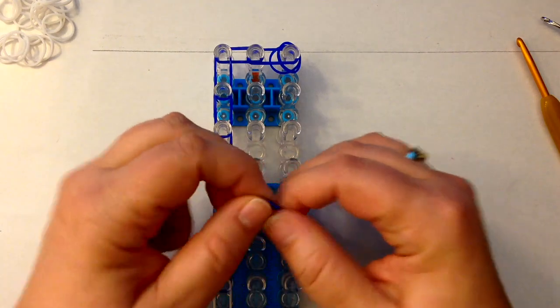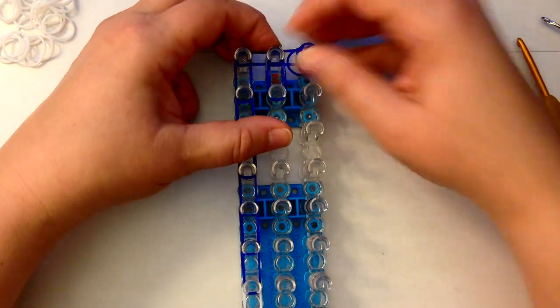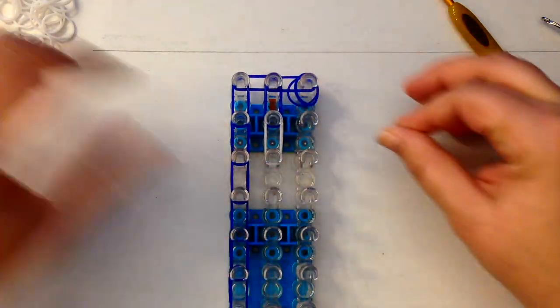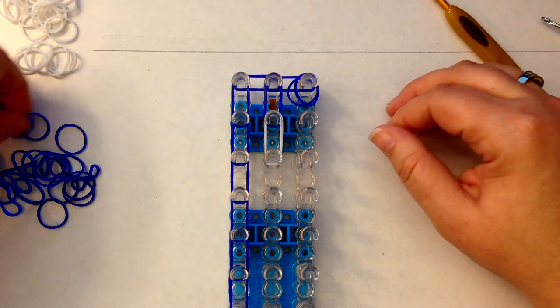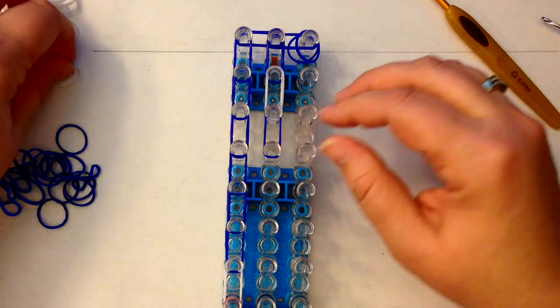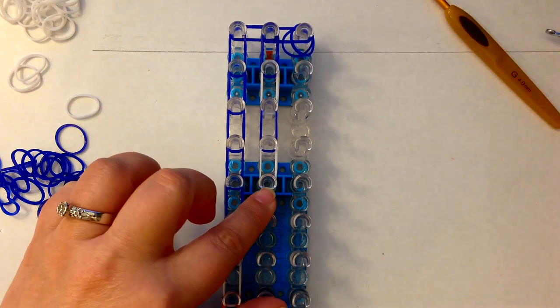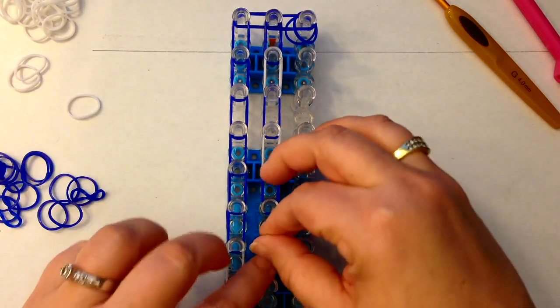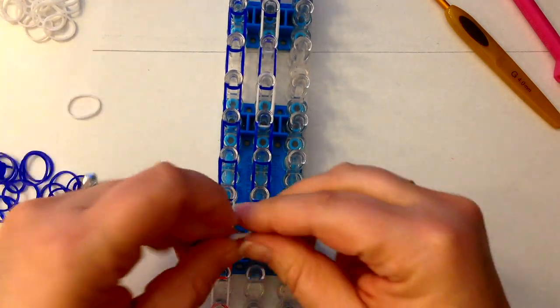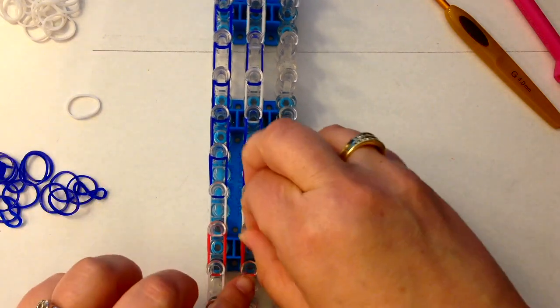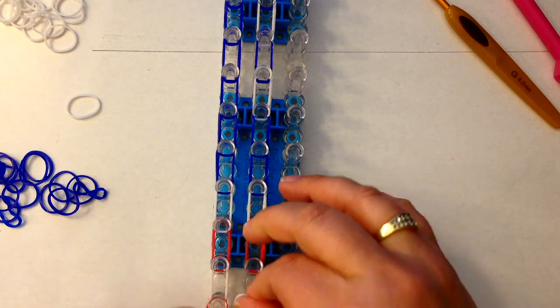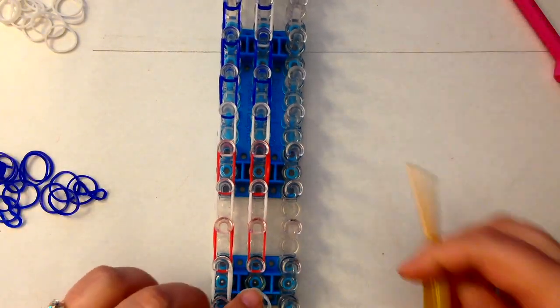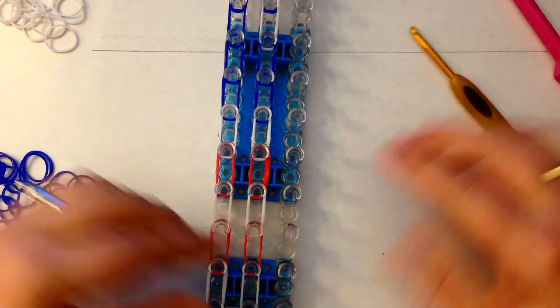We're not actually going to use this last peg here. Our next column starts with a pair of blue, a pair of blue, a pair of white, a pair of blue, a pair of white, and then two pair of blue. These rows are going to stay the same - you're going to be doing a pair of white, a pair of red, a pair of white, a pair of red, and a pair of white. That's going to be the same all the way through for the entire length of it.